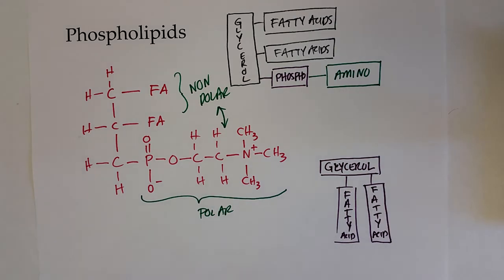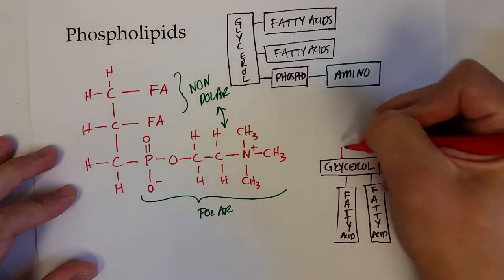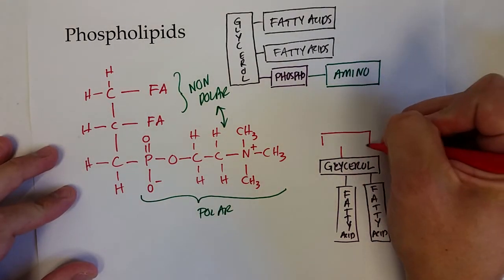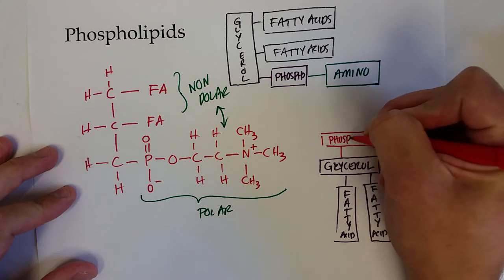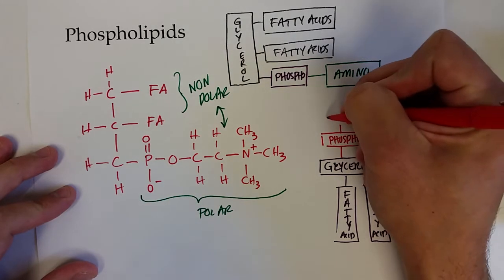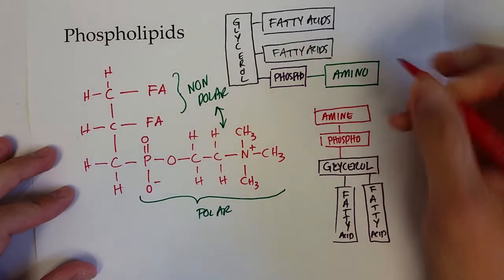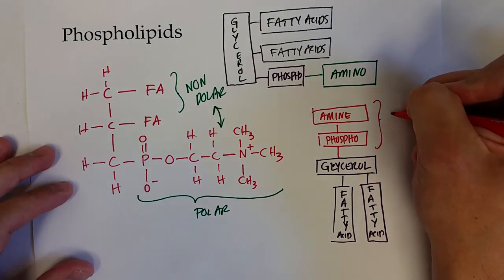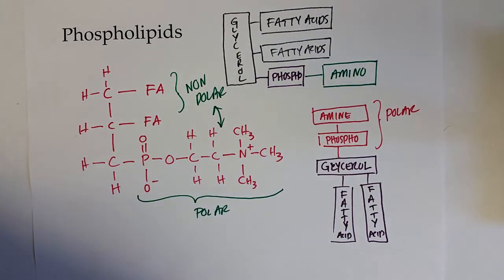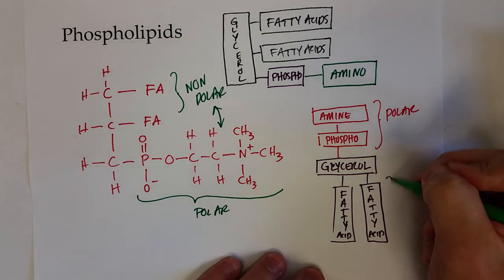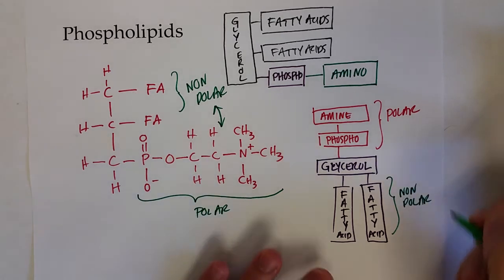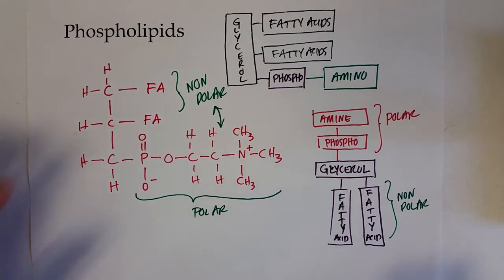And the polar group, the phospho and the amine group, swing around to the other side. And they do that because this of course is very polar and it's hydrophilic. And this region is nonpolar and hydrophobic. So it will spontaneously orientate itself into this configuration.